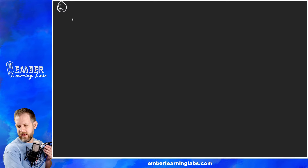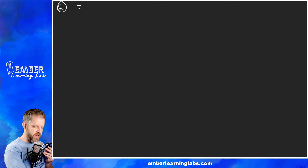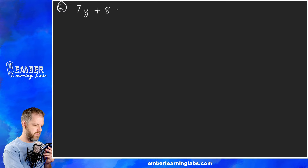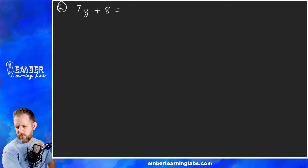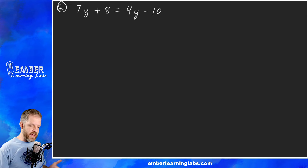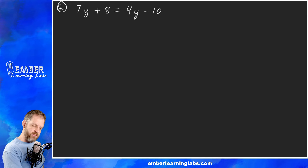Example two: 7y plus 8 equals 4y minus 10. Same sort of idea — we want to move the 4y over to be with the other y term.